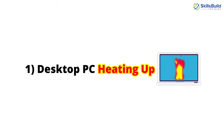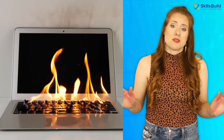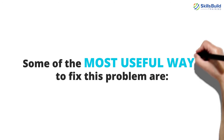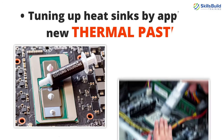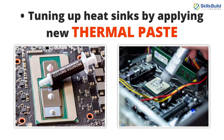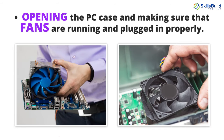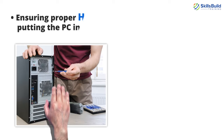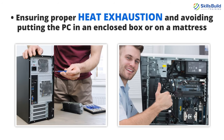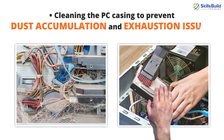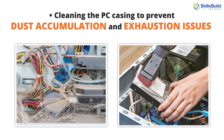Number 1: Desktop PC Heating Up. One of the most common desktop PC troubleshooting problems is a computer heating up beyond acceptable levels. Some of the most useful ways to fix this problem are: tuning up heat sinks and applying new thermal paste, opening the PC case and making sure that fans are running and plugged in properly, ensuring proper heat exhaustion and avoiding putting the PC in an enclosed box or on a mattress, and cleaning the PC casing to prevent dust accumulation and exhaustion issues.